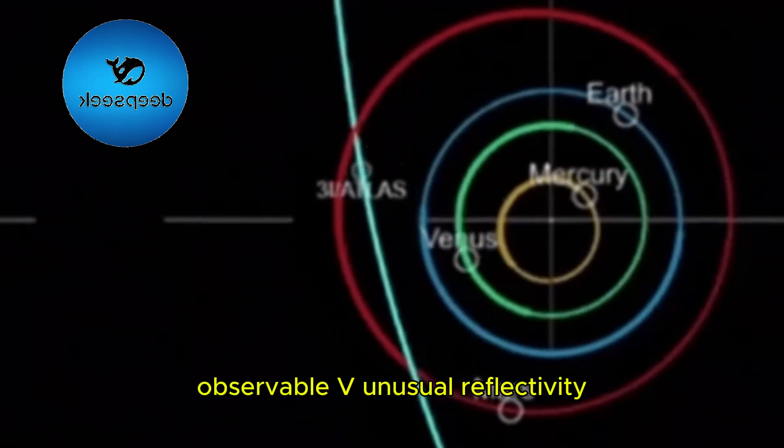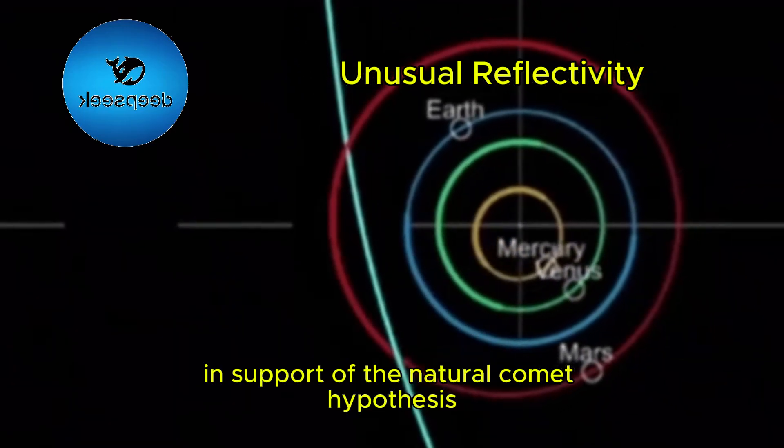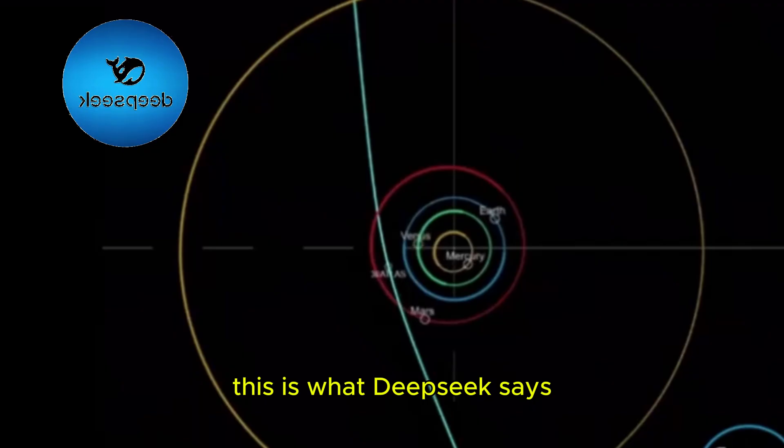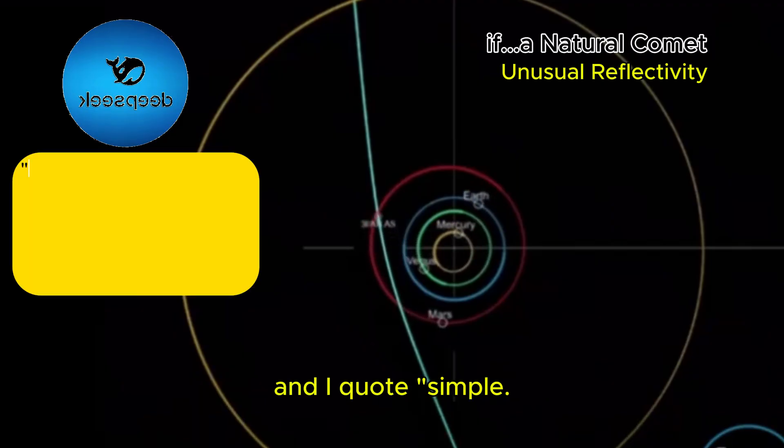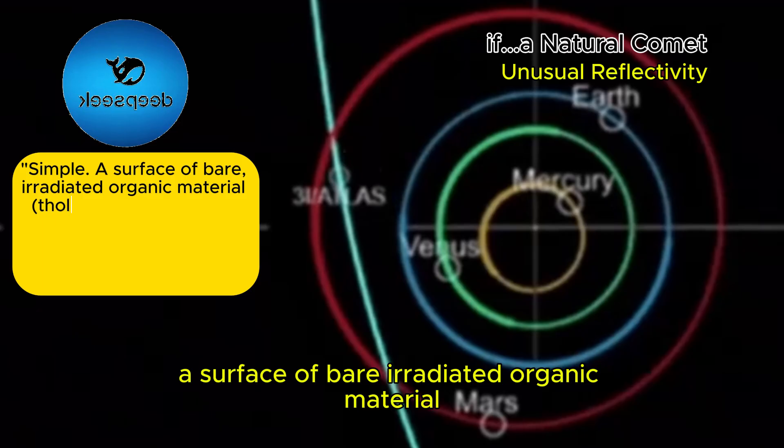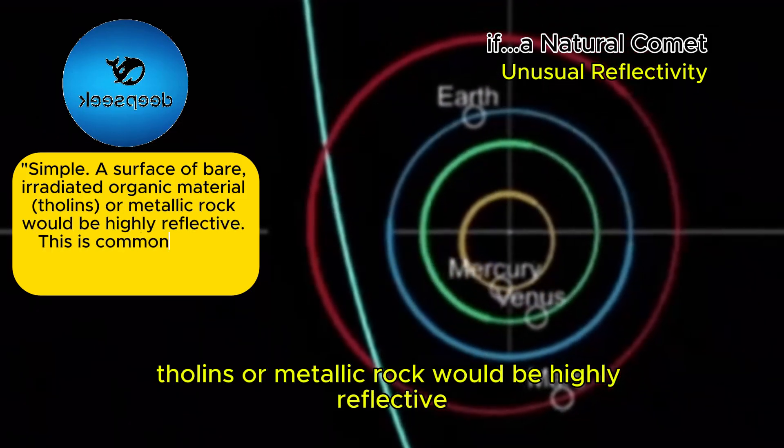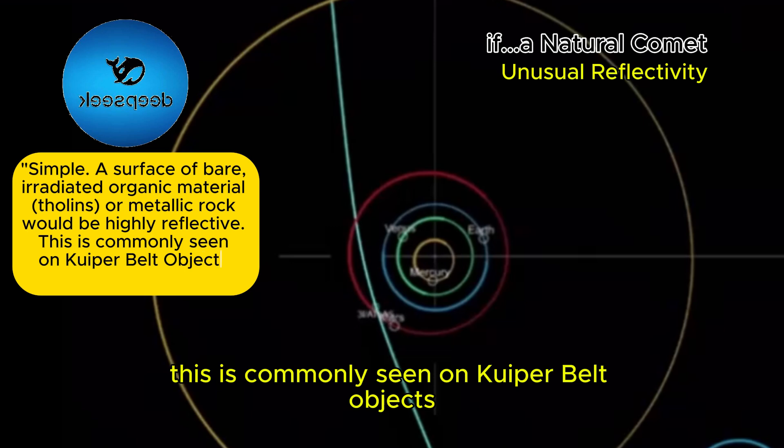Observable 5: Unusual Reflectivity. In support of the natural comet hypothesis, this is what DeepSeek says, quote: simple. A surface of bare, irradiated organic material, tholans, or metallic rock would be highly reflective. This is commonly seen on Kuiper Belt objects and asteroids.